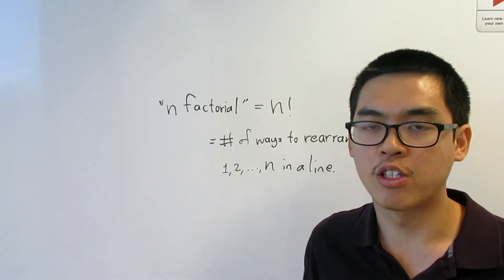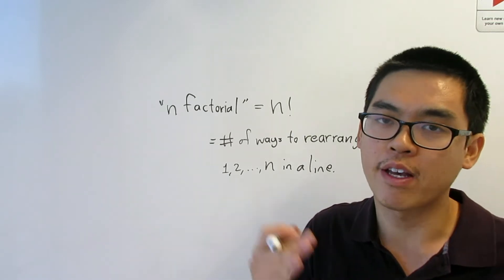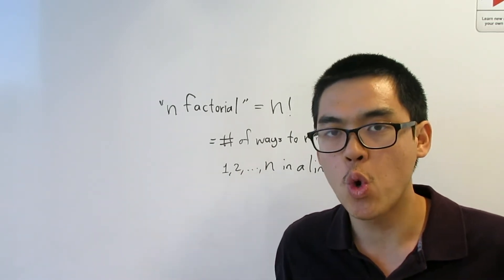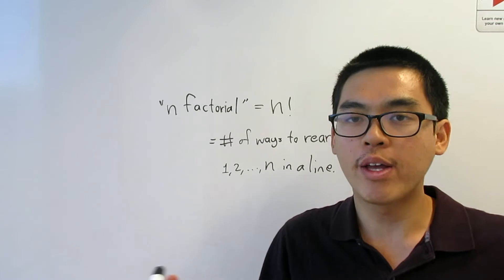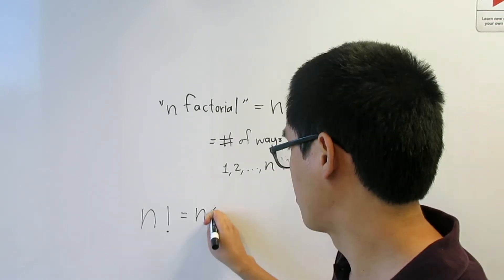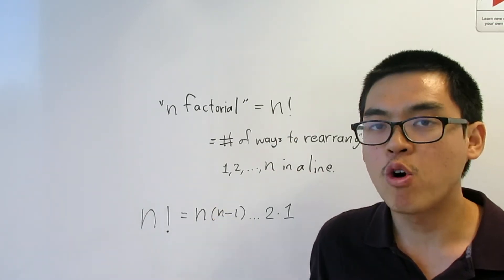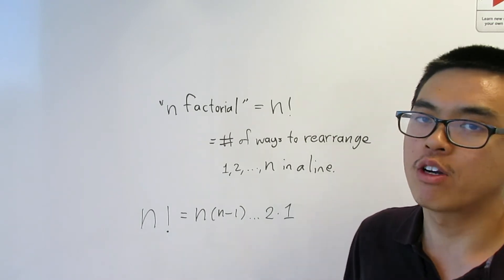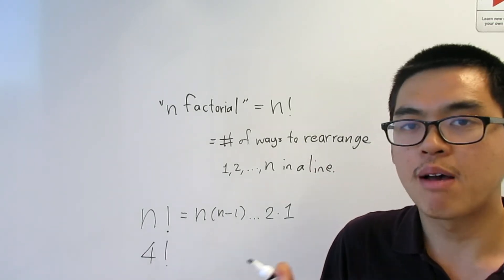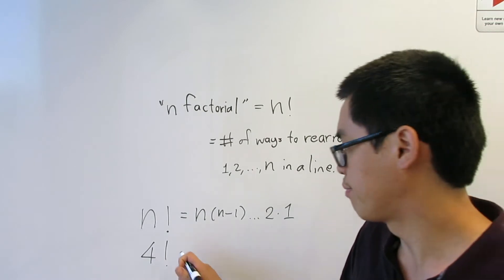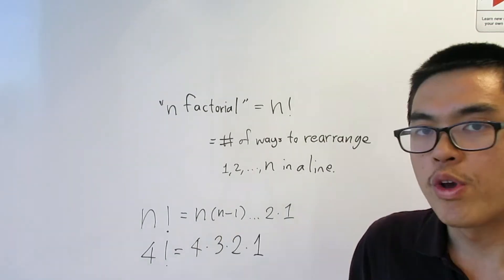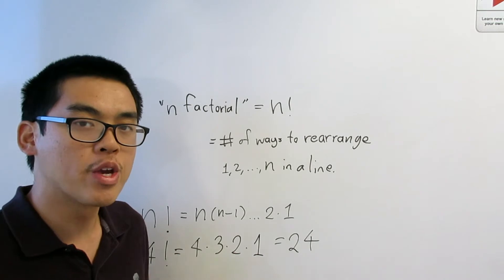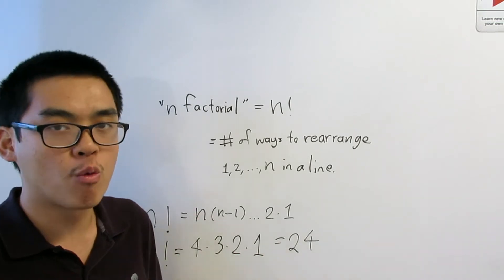The formula for N factorial is: N factorial equals N times N minus one times N minus two, all the way down to two times one. As an example, four factorial is four times three times two times one, which gives you 24. So there should be 24 ways to rearrange the numbers from one to four.